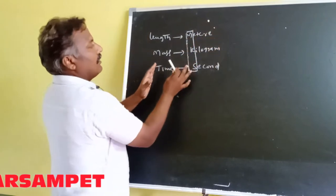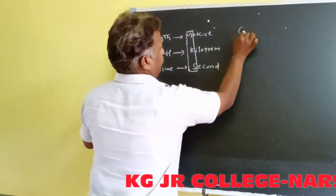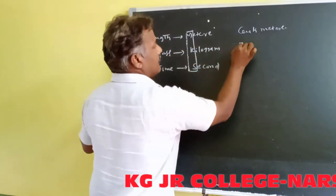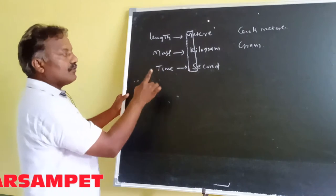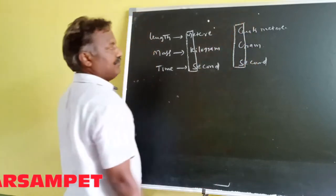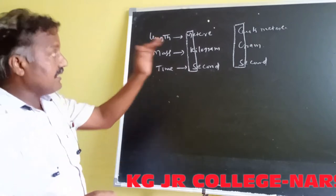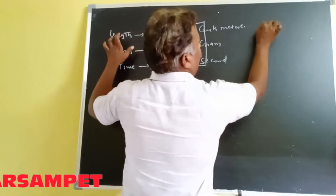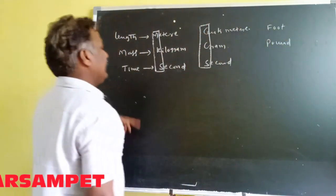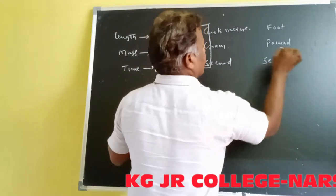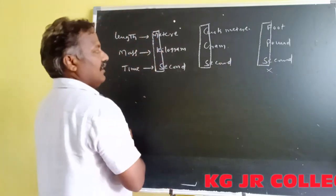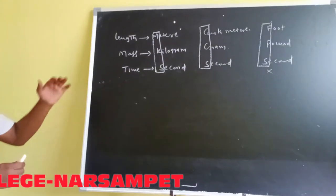Another unit of length is centimeter, another unit of mass is gram, and another unit of time is second. The first letters of these three units form the CGS system. There is also one old system: the FPS system, where length unit is foot, mass unit is pound, and time unit is second. Both the CGS and MKS systems are very useful for conversion of units.